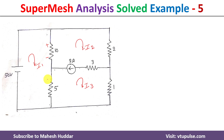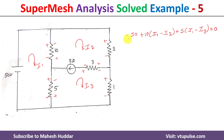As per the I1 direction this is plus minus plus minus, and as per the I2 direction this is plus minus plus minus plus minus, and as per the I3 direction this is plus minus plus minus plus minus. Now we will find the equation using Kirchhoff's Voltage Law: minus 50 plus 10(I1 minus I2) plus 5(I1 minus I3). Simplifying: minus 50 plus 10·I1 minus 10·I2 plus 5·I1 minus 5·I3.